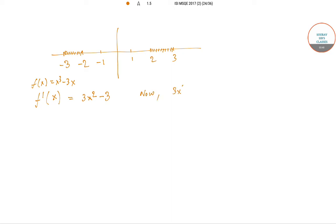Now 3x squared minus 3 greater than 0 implies x squared greater than 1, which implies x is greater than 1 or x is less than -1. So in both this intervals, [-3, -2] as well as [2, 3], we see that f(x) is an increasing function.